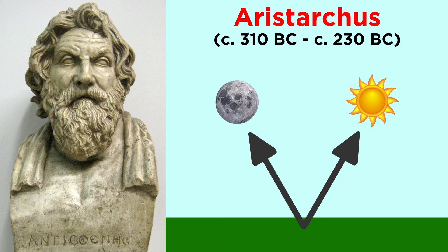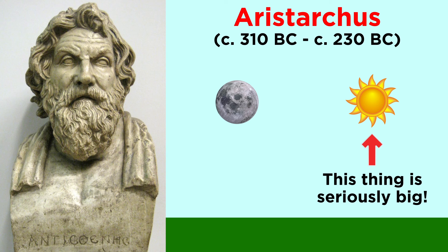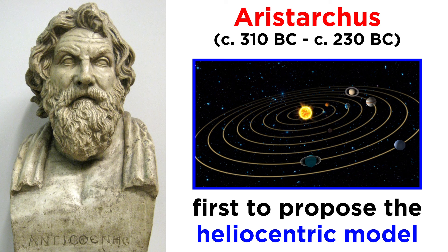He also made estimates regarding the relative distances to the moon and sun, and although those were not as correct as his other work, he was the first to suggest that the sun is much larger than the earth, and even proposed that the earth goes around the sun.